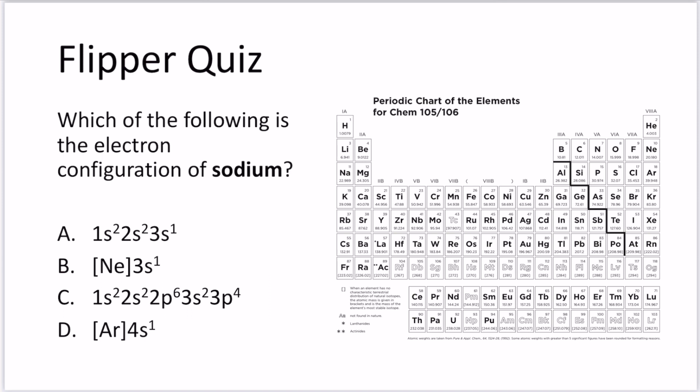So sodium is located here on the periodic table at number 11, and if we're writing the electron configuration we could start with 1s2 going across the first period, 2s2 2p6 going across the second period, and then 3s1.